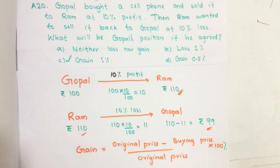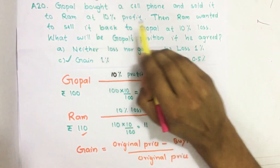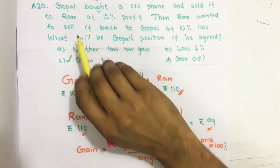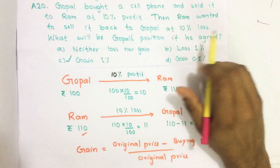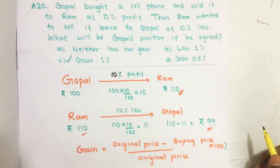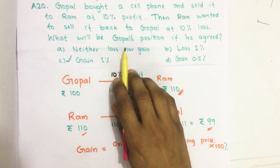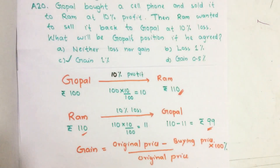Hello everyone. Here I am going to solve 2017 C-SAT question number 20 from question paper series A. Gawbal bought a cell phone and sold it to Ram at 10% profit. Then Ram wanted to sell it back to Gawbal at 10% loss. What will be Gawbal's position if he agreed?